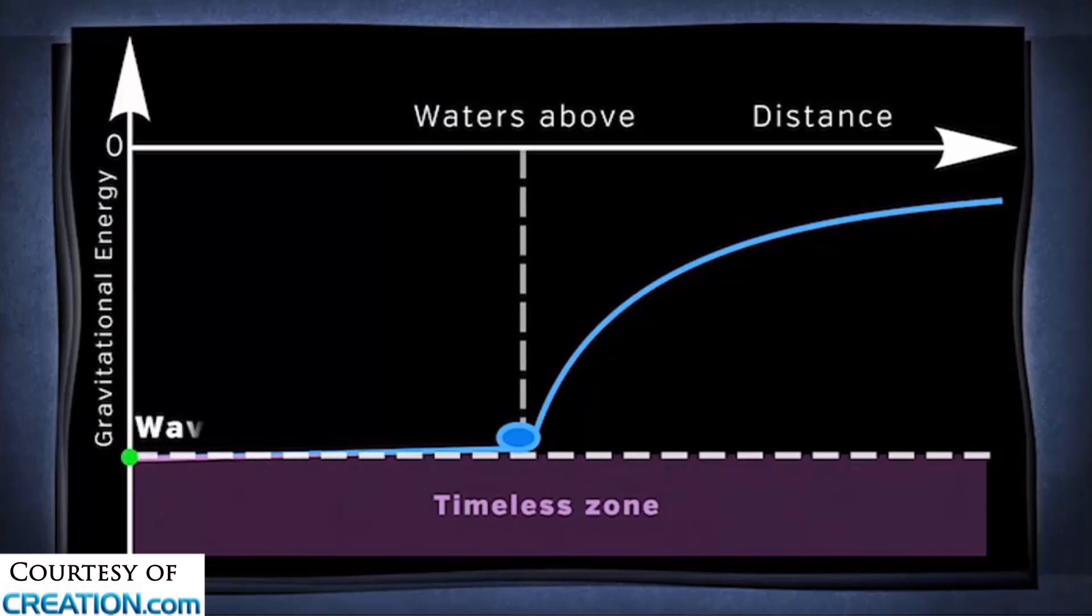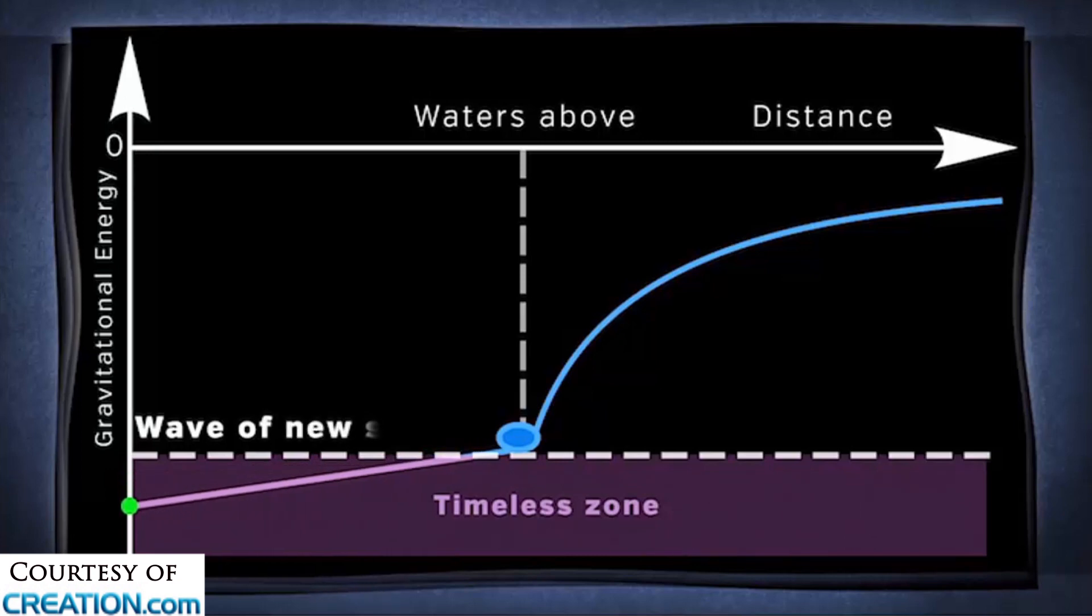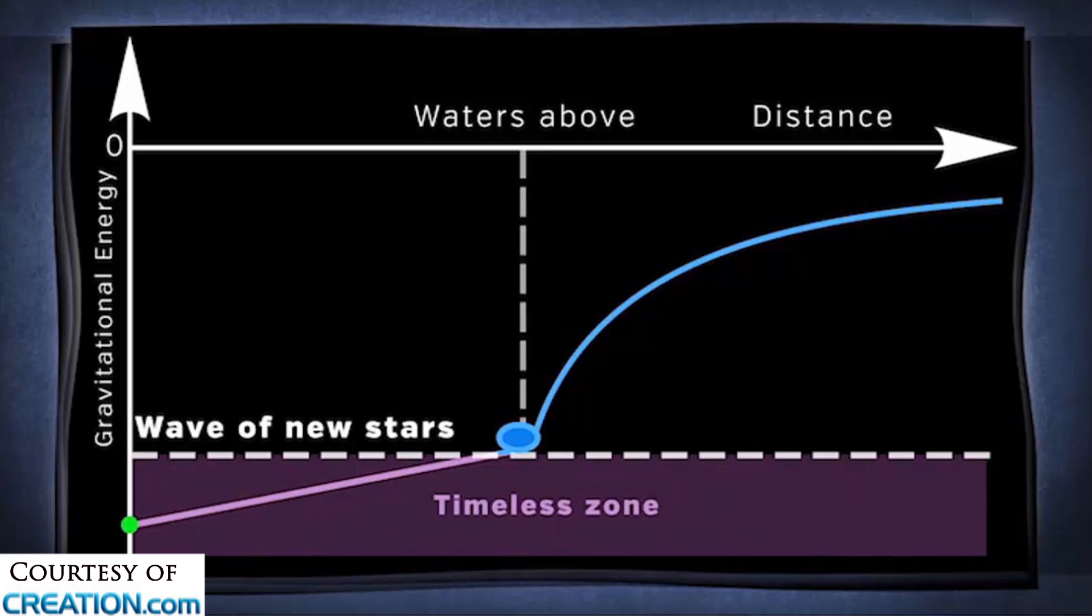So there's a wave of new stars, and you notice the dent is now tilted down, and it's really deep near the earth, and it's a little shallower at the waters above. Okay, now we have a new scriptural effect to talk about, stretching out the heavens.